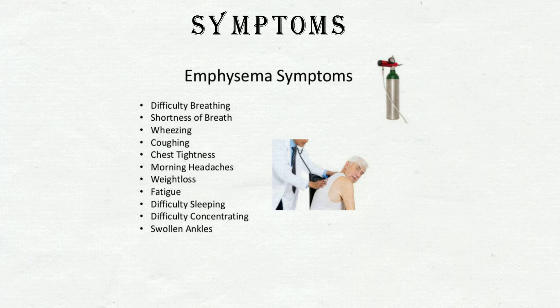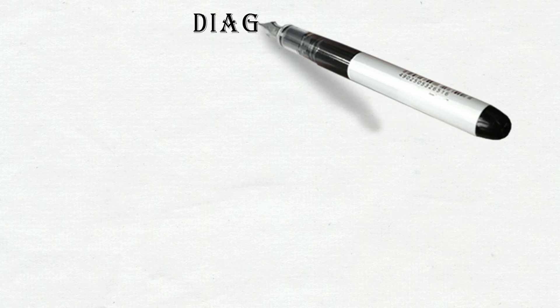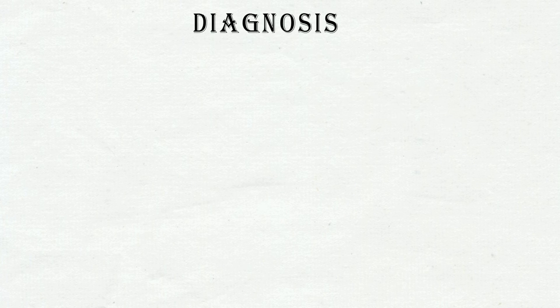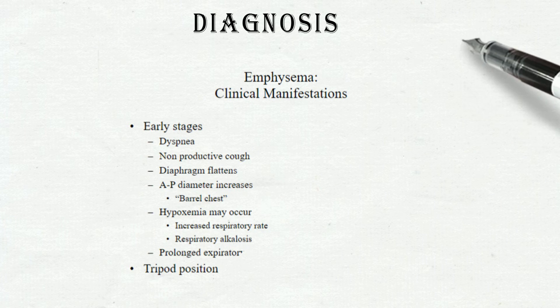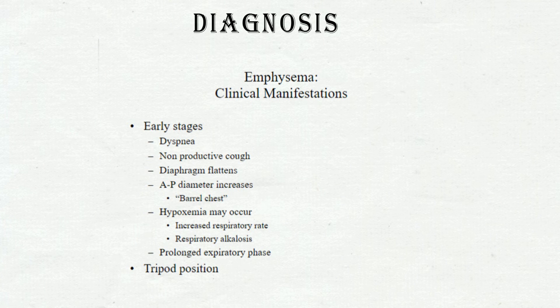Emphysema clinical manifestations in early stages include dyspnea, non-productive cough, flattened diaphragm, increased anterior-posterior diameter (barrel chest), hypoxemia may occur, increasing respiratory rate, respiratory alkalosis, prolonged expiratory phase, and tripod position.